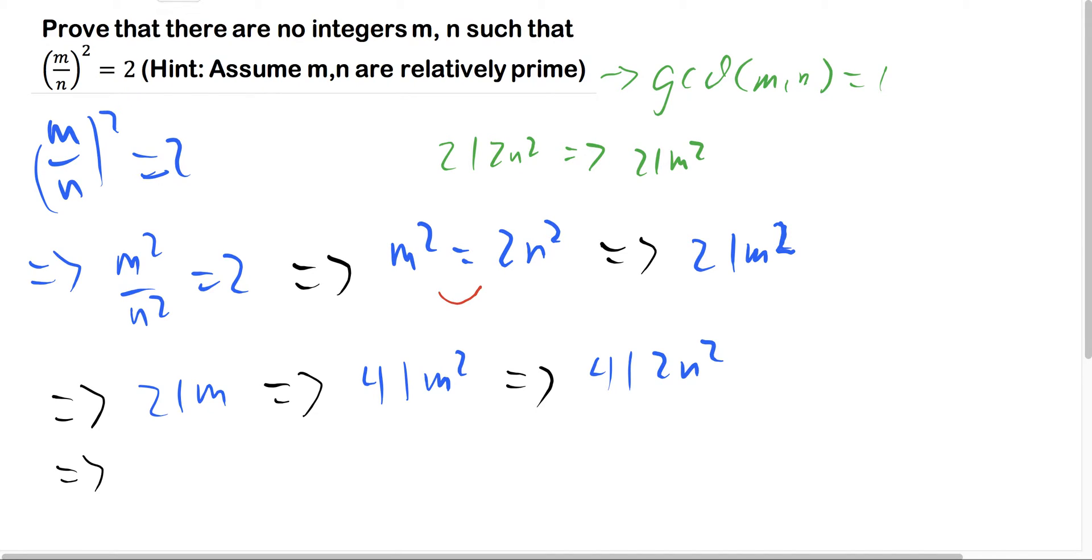So let's divide both sides by 2, and you get 2 divides n squared. Which, like above, when we had 2 divides m squared, it also divides m.